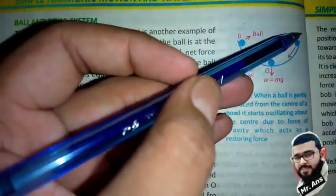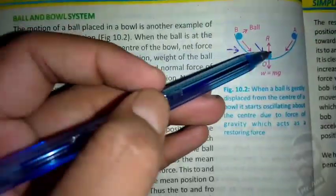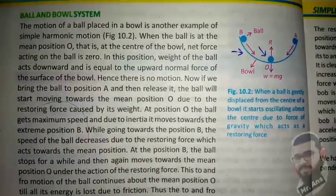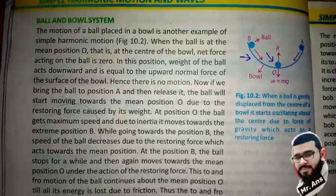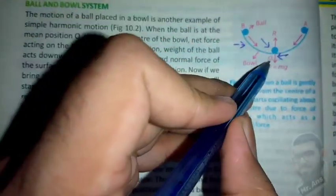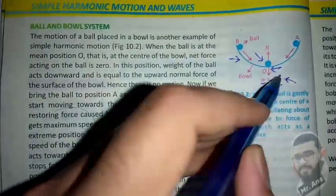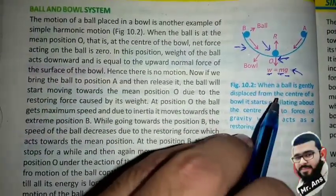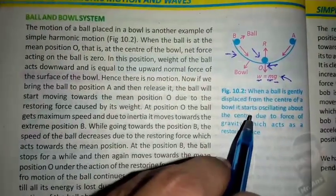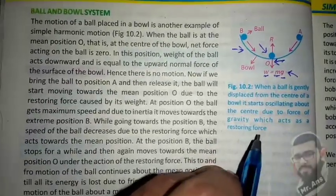The ball is moving to the upside and to the downside, and this simple harmonic motion continues. We will discuss how this phenomenon happens in the ball during our ball's movement upward and downward. Here you can see the mean position of this ball — the mean position where weight is equal to mg. When a ball is gently displaced from the center, it starts oscillating about the center due to the force of gravity, which acts as a restoring force.